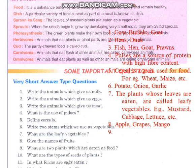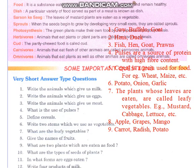What are the two plants which are eaten as foods? We have to name two plants that we eat as food. Write any plant you like — carrot, radish, potato. Okay, write any plant that we eat as food; there are so many plants that we eat as food.